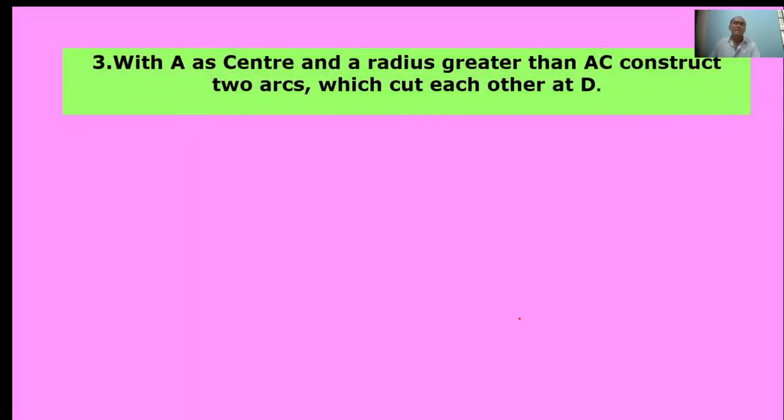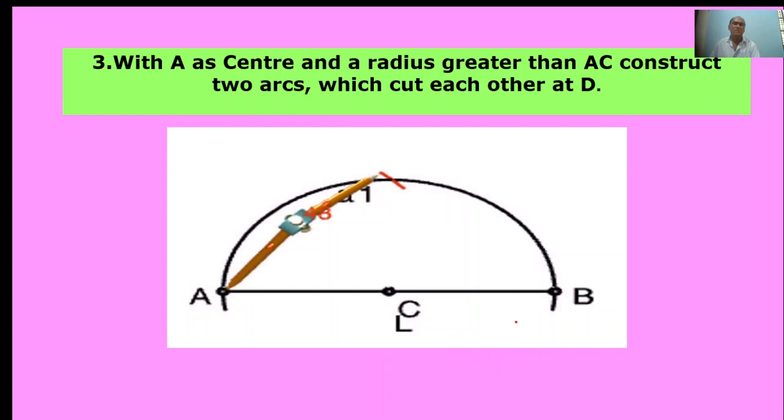With A as center and radius greater than AC, construct two arcs which cut each other at D. Here, A is the center. More than AC length, take a radius.